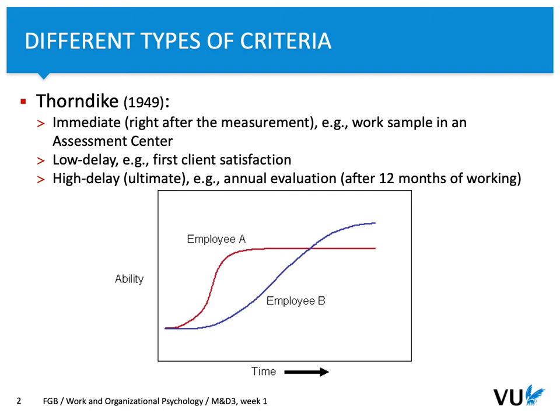Let's consider another example. You want to predict work performance based on a specific ability that develops across work months or years. We have two development patterns for two types of employees, A and B. Employee A develops this ability with a different dynamic than employee B, and after a long time, employee B is able to develop the skill even higher than employee A.